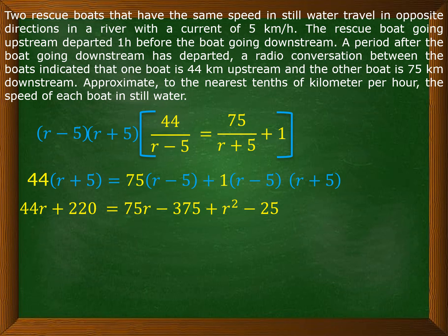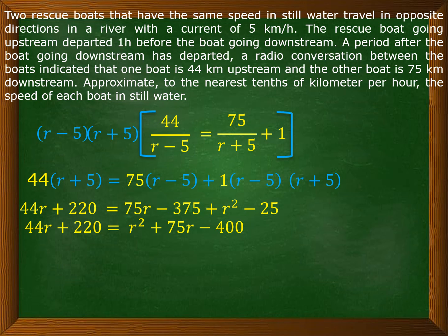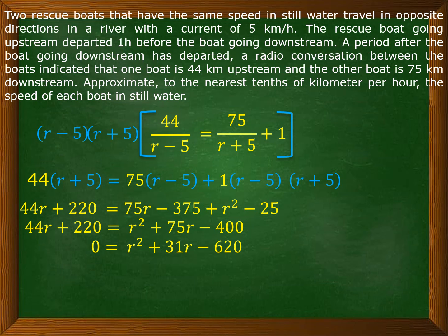Simplifying the right side, combine negative 375 and negative 25 to get negative 400. Arranging in standard form, transfer 44R and 220 to the right: zero equals R squared plus 31R minus 620. Here, 75R minus 44R equals 31R, and negative 400 minus 220 equals negative 620.